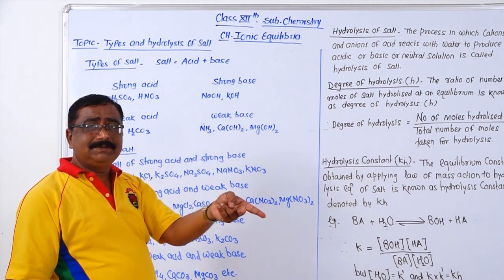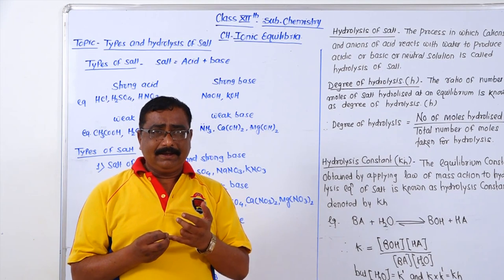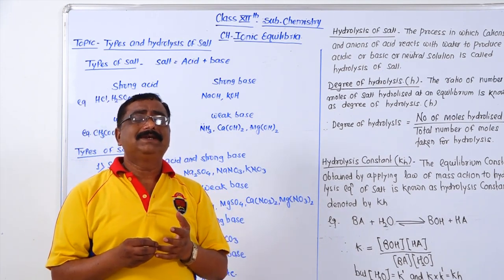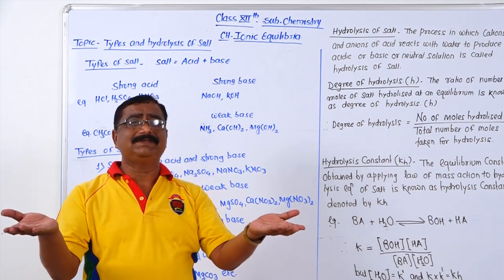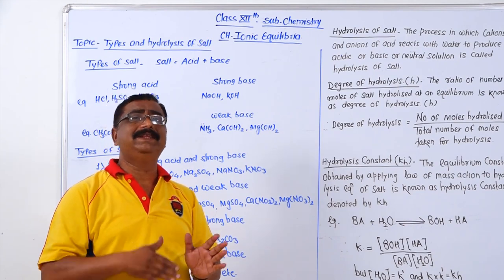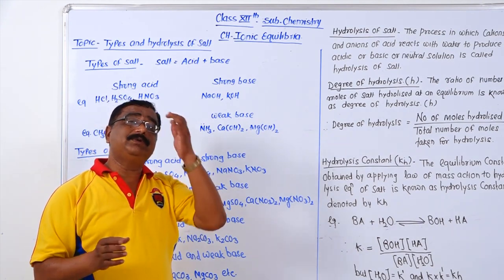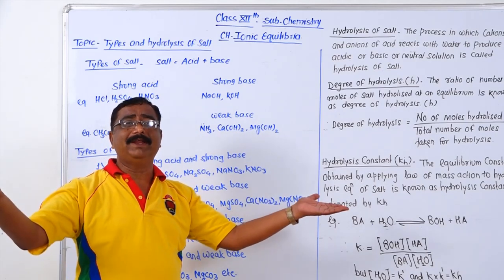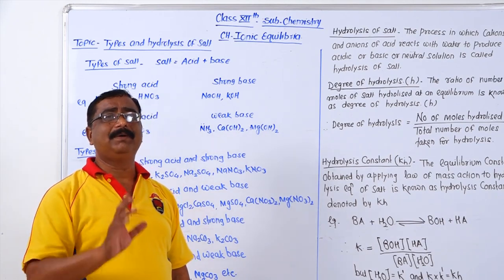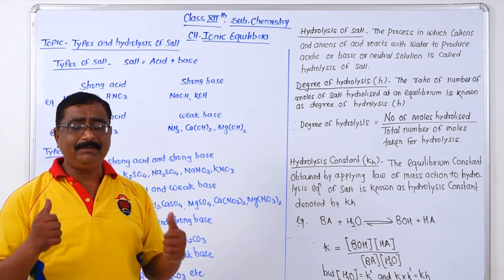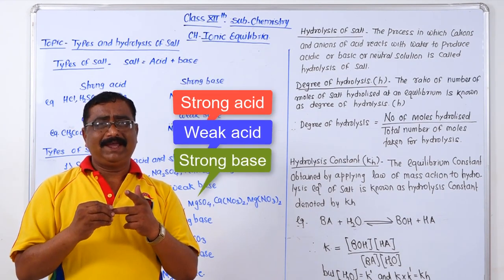Acids are of two types and bases are also of two types: strong acid and weak acid, strong base and weak base. According to Arrhenius, substances which when dissolved in water produce a large number of H⁺ ions are called strong acids, and which produce fewer H⁺ ions are called weak acids. Similarly, substances which produce a large number of OH⁻ ions are called strong bases, and those producing fewer OH⁻ ions are called weak bases.